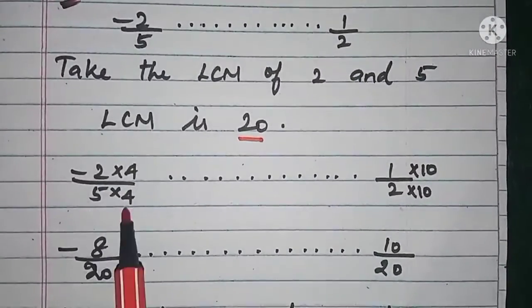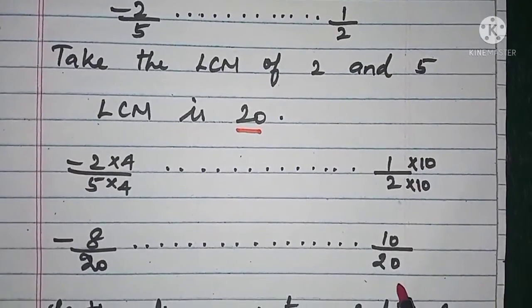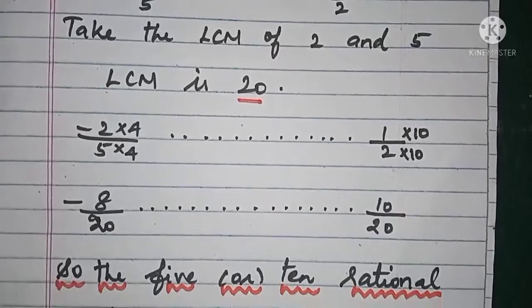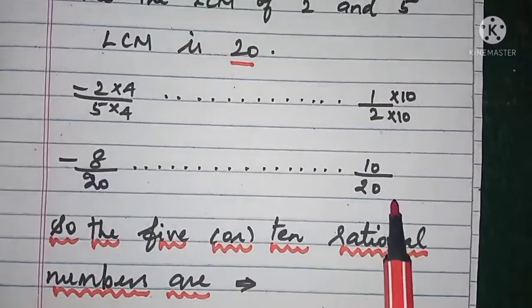Now 2×4=8, 5×4=20, so -8/20. At last, 10×1=10, 2×10=20, so 10/20. Now you are going to write how many numbers are there in between this number and the last number.